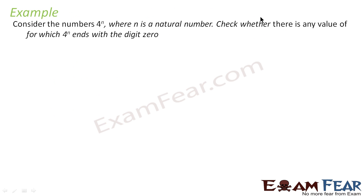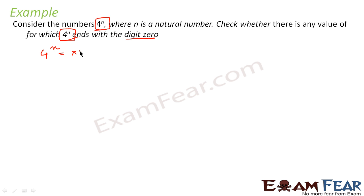Let's take an example. The question says: consider the number 4 to the power n, where n is a natural number. Check whether there is any value of 4 to the power n that ends with the digit 0 — that is, is there any number of this form that ends with a 0?